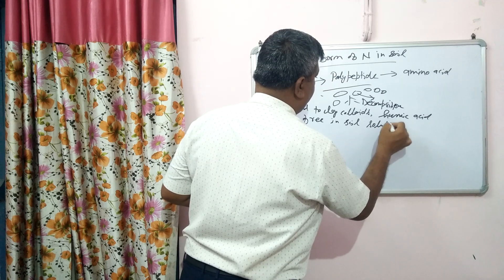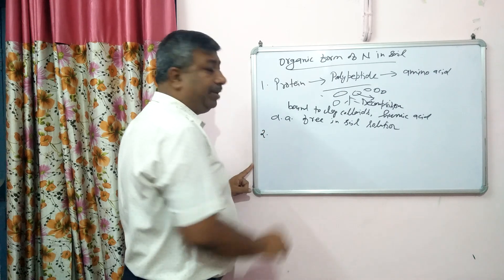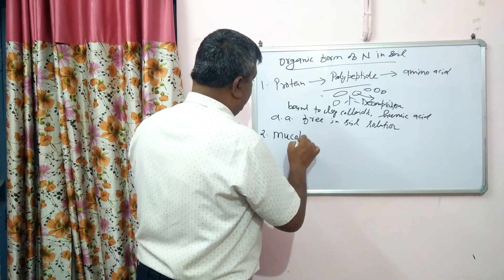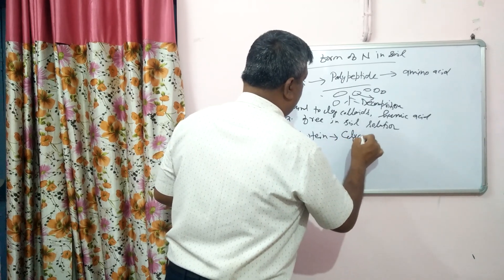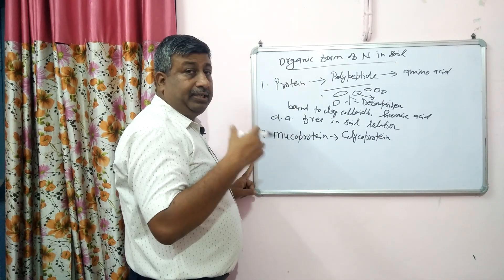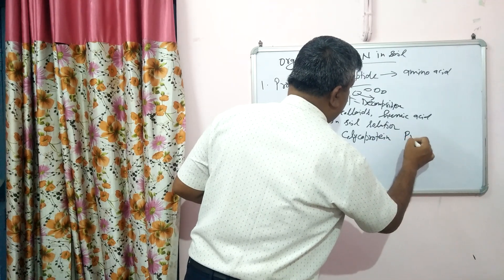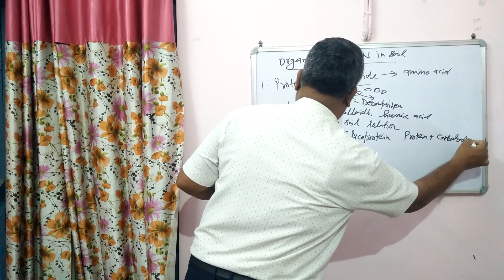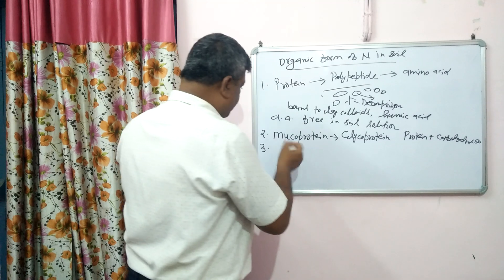Another important organic form is mucoprotein, also called glycoprotein. These are proteins conjugated with carbohydrates which are present in soil. So mucoprotein or glycoprotein is another organic nitrogen form. Another form may be amino sugar.